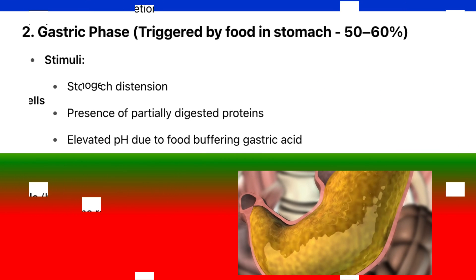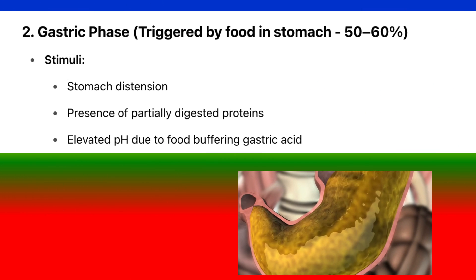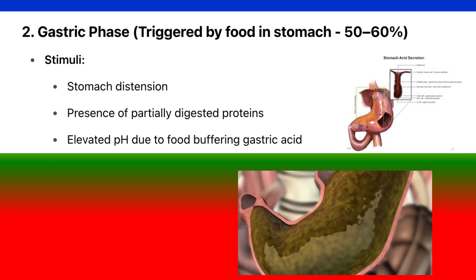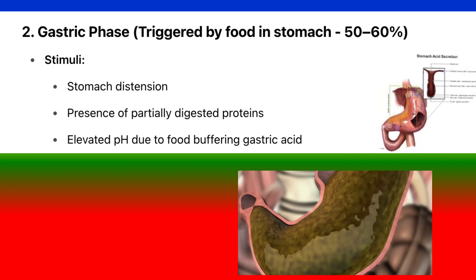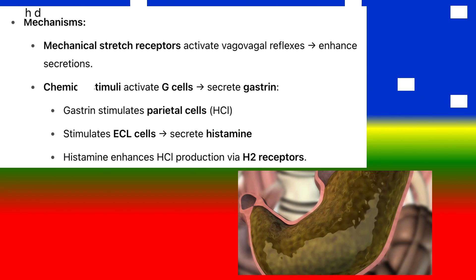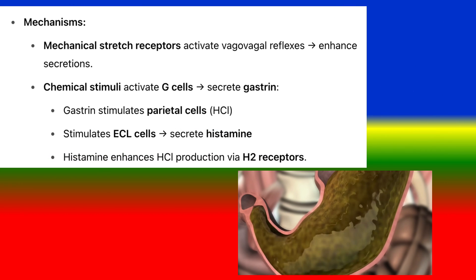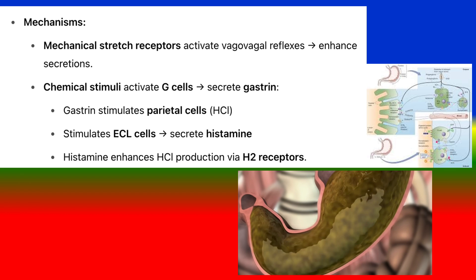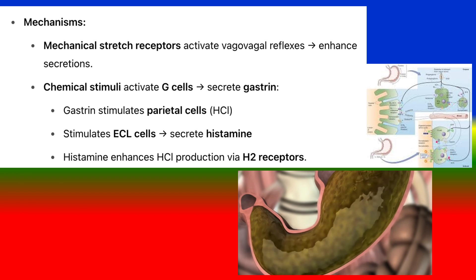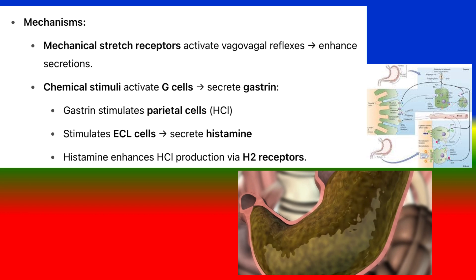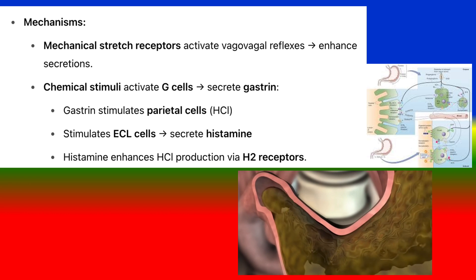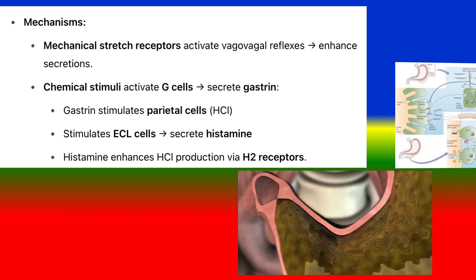2. Gastric phase — triggered by food in the stomach, accounts for 50–60% of secretion. Stimuli include stomach distension, presence of partially digested proteins, and elevated pH due to food buffering gastric acid. Mechanisms: mechanical stretch receptors activate vago-vagal reflexes to enhance secretions; chemical stimuli activate G cells to secrete gastrin; gastrin stimulates parietal cells to produce HCL and stimulates ECL cells to secrete histamine; histamine enhances HCL production via H2 receptors.